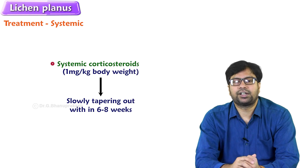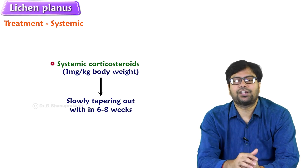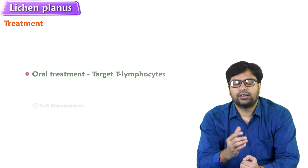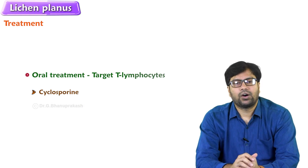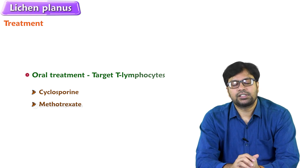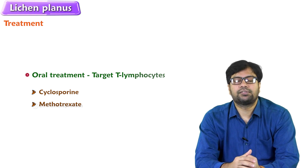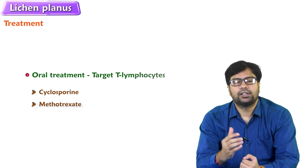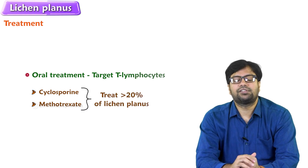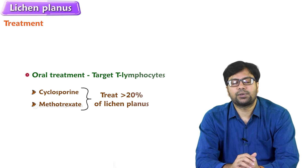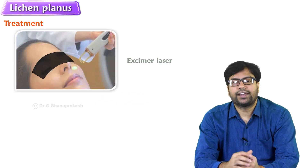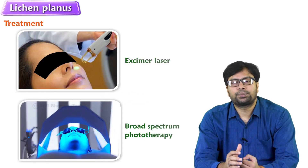It should not be tapered suddenly, as it may trigger a rebound phenomenon of lichen planus. Other oral treatments which target T lymphocytes are cyclosporine or methotrexate — these are systemic drugs we can suggest for treating more than 20 percent body involvement. Other forms of treatment for lichen planus include excimer lasers and broad-spectrum phototherapy.